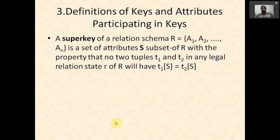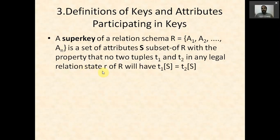A super key of a relation R(A1, A2, ..., AN) is a set of attributes S such that no two tuples T1 and T2 in any legal relational state of R will have the same value of S. In other words, if S is a super key, no two rows in the table will have the same values in the S part.